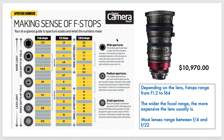The widest apertures have f-stops with the smallest numbers, as we've discussed. The maximum aperture available depends on the lens you're using. On many zoom lenses, for example, the maximum aperture gets smaller as you zoom in. So when you have a zoom lens and you rotate your zoom, it changes the f-stops that are available to that lens because f-stops are tied to the lens.